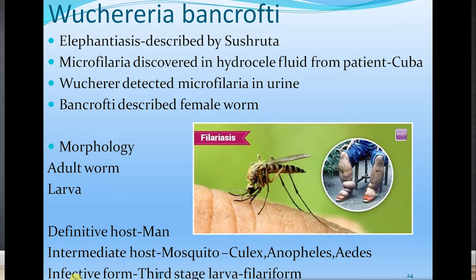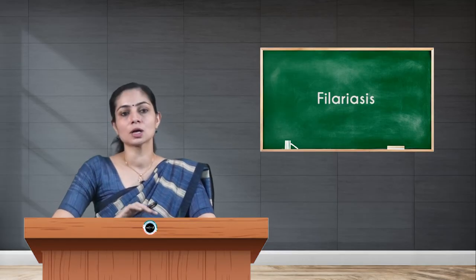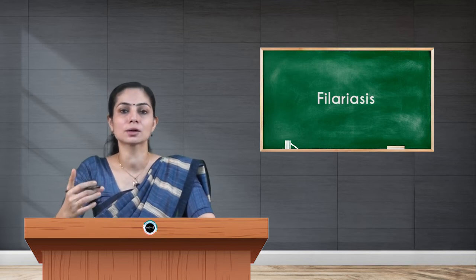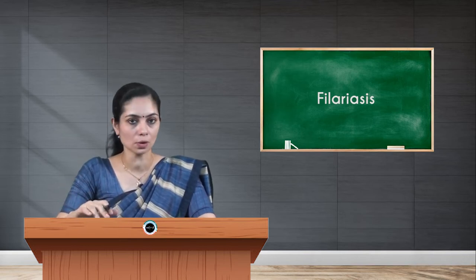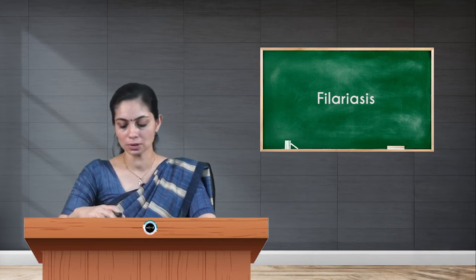Looking at the morphology, there are two forms for this parasite as it belongs to filarial nematode: the adult worm and the larval stage. In case of infection, man becomes the definitive host for the parasite — the definitive host is where you find the adult worm. The intermediate host for this infection will be a mosquito, usually Culex, Anopheles, or Aedes species. The infective form — which enters the human body — is the third-stage larva, the filariform larva.